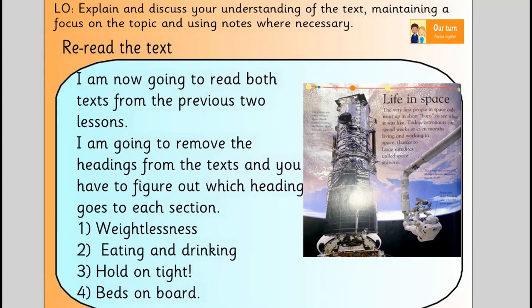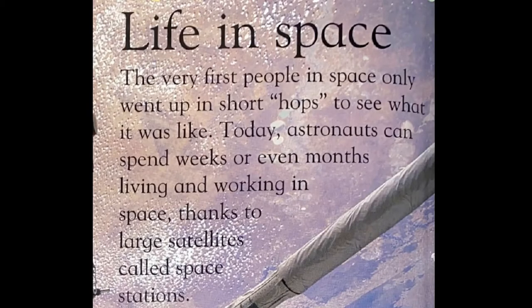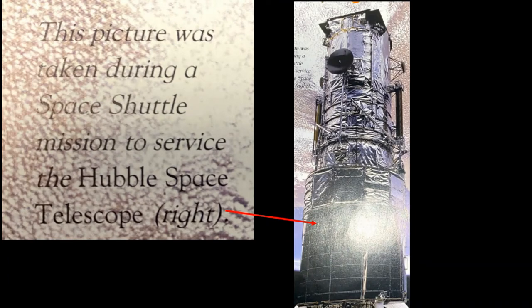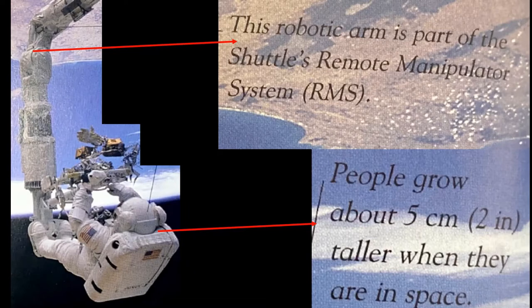I'm now going to read both texts from the previous two lessons and I'm going to remove the headings. You have to figure out which heading goes to each section — the headings are weightlessness, eating and drinking, hold on tight, and beds on board. The top heading is obviously just life in space. Life in space: the very first people in space only went up for short hops to see what it was like. Today astronauts can spend weeks or even months living and working in space, thanks to large satellites called space stations. This picture was taken during a space shuttle mission to service the Hubble Space Telescope, which is on the right. This robotic arm is part of the shuttle's remote manipulator system, the RMS.